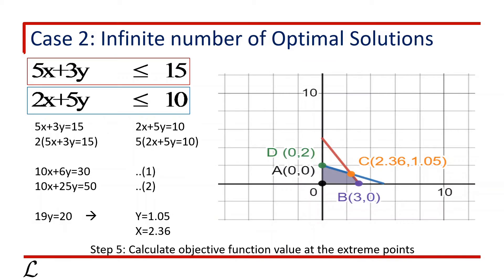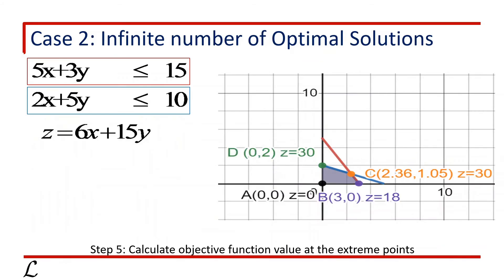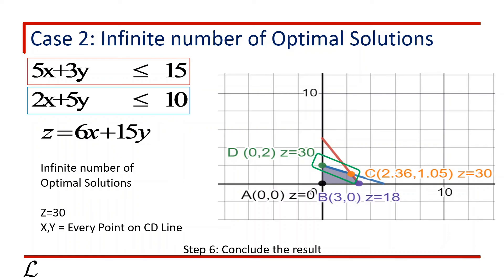Now Step 5 is to calculate the objective function value at these 4 extreme points. The objective function is z equals 6x plus 15y. Substituting the values: at Point A, z equals 0; at Point B, z equals 18; at Point C, z equals 30; and at Point D, z equals 30 as well. Step 6 is to conclude the result. With the maximization objective, z equals 30 is the maximum, achieved at both Point C and Point D. This implies that z is maximum and equals 30 on every point on the line connecting C and D. Hence, we get an infinite number of optimal solutions on the edge of the feasible region along line CD, where x and y can be any values along line CD giving z equals 30.